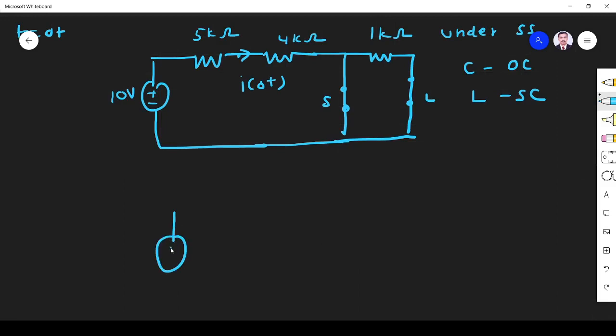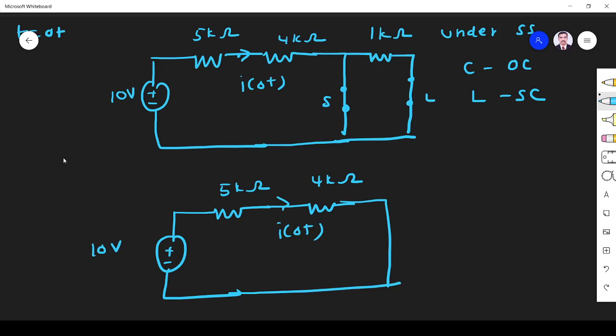I can draw this circuit with 5 kilo ohm and 4 kilo ohm in parallel. These two in parallel will become short circuited. At t = 0+ I have to find i(0+).